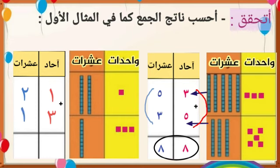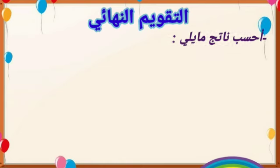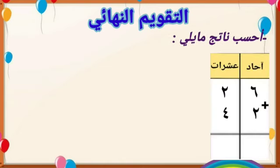واحد وعشرون: واحد في الآحاد وعشرتان. ثلاثة عشر: ثلاثة آحاد وعشرة واحدة. إذن: واحد وعشرون زائد ثلاثة عشر يساوي أربعة وثلاثون.